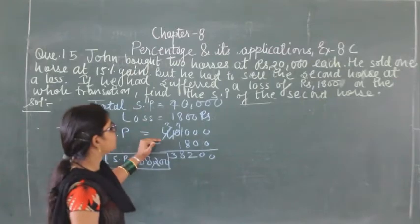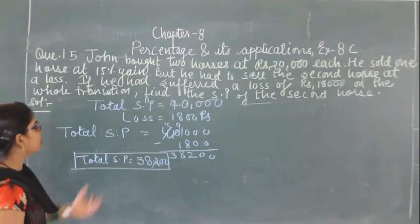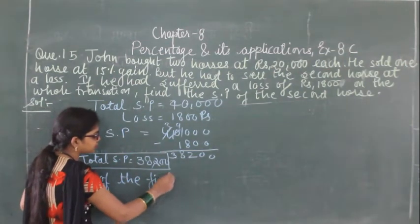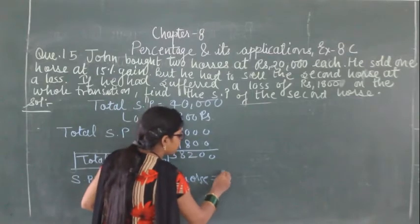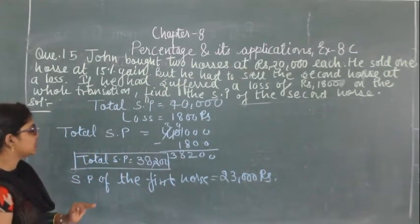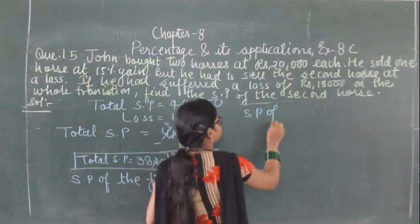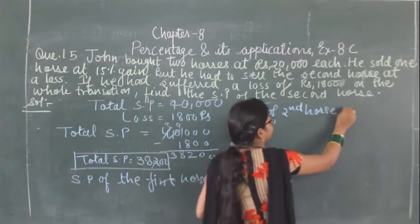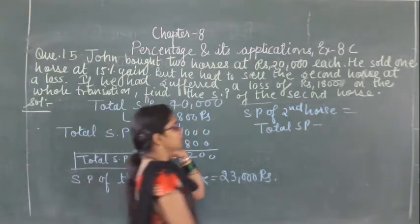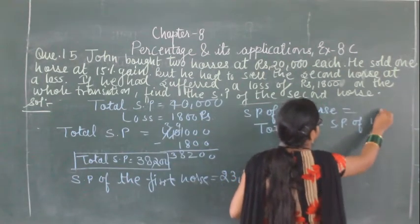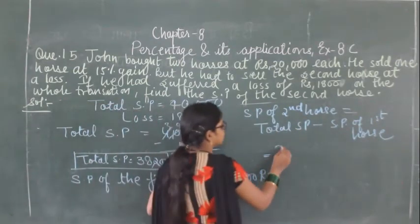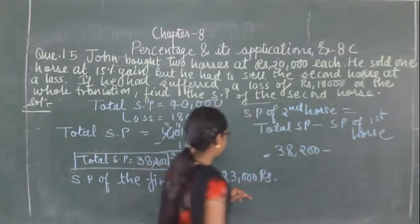Now we know the total selling price. We have to find the selling price of the second horse. Selling price of second horse equals total selling price minus selling price of first horse. That is 38,000 minus 23,000.